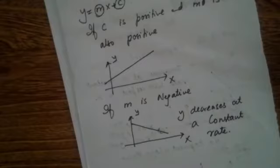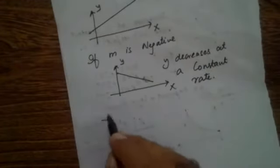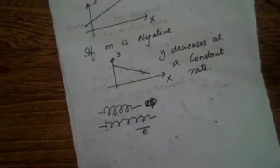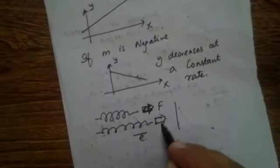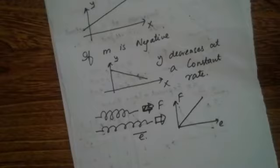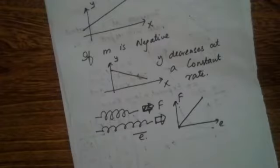Things which increase or decrease at a constant rate are quite easy to deal with mathematically. For example, in the case of Hooke's Law, when you apply a force to extend a spring, force is directly proportional to extension. Force increases at a constant rate with respect to extension, or extension increases at a constant rate with respect to force. Such mathematical equations are very easy to deal with.